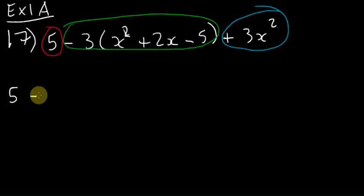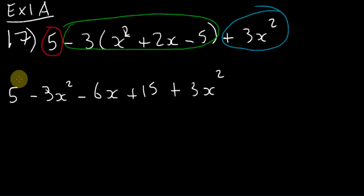x² will be -3x², -3 times 2x will be -6x, -3 times -5x plus 15, plus 3x². Collect like terms. OK, let's use colors, why not. 5 plus 15 is...